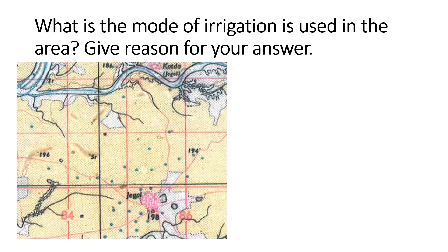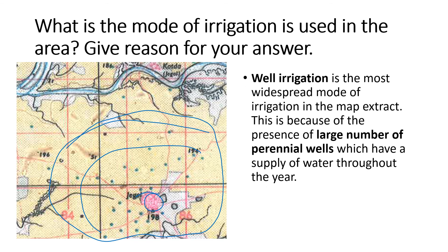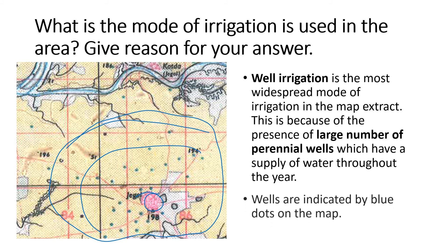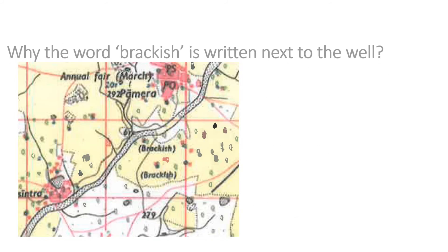What is the mode of irrigation used in the area? Give reason for your answer. We can see Jagol here — yellow wash in the area — and a number of perennial wells. So well irrigation is the most widespread mode of irrigation in the map extract. This is because of the presence of a large number of perennial wells, which have a supply of water throughout the year. Wells are indicated by blue dots on the map.